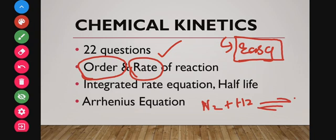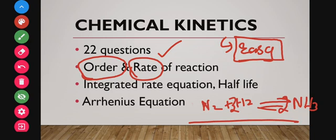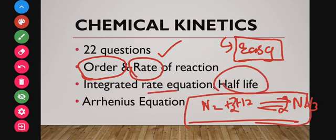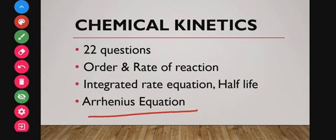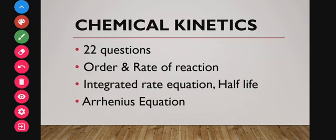For example, if nitrogen plus hydrogen gives ammonia, you have to know how to write the rate of reaction for that given reaction. You also need to learn the integrated rate equation, how to find the half-life and its relationship to reaction order — zero order, first order — and the Arrhenius equation: how to find temperature and how to find activation energy. These are the important concepts in chemical kinetics.